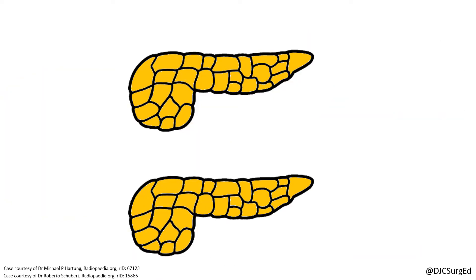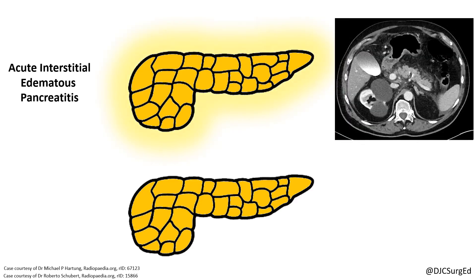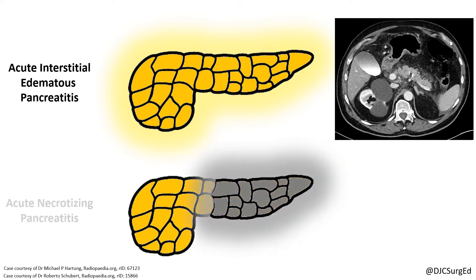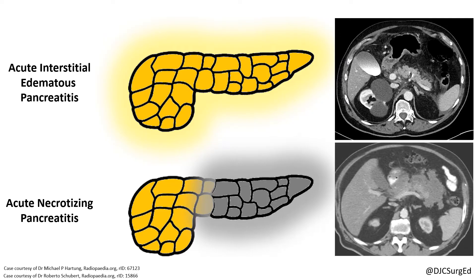Local complications, when present, are defined by the type of acute pancreatitis and the duration of onset. Most cases are acute interstitial edematous pancreatitis, characterized by acute inflammation and pancreatic parenchymal enhancement, whereas 20% of patients develop pancreatic necrosis. Contrast-enhanced CT demonstrates a non-enhancing pancreas or peripancreatic necrosis.